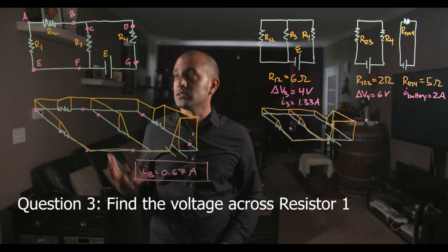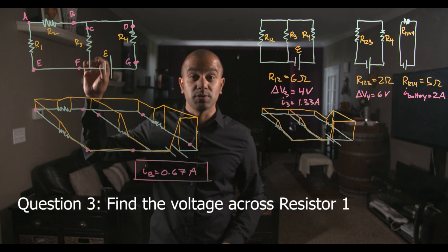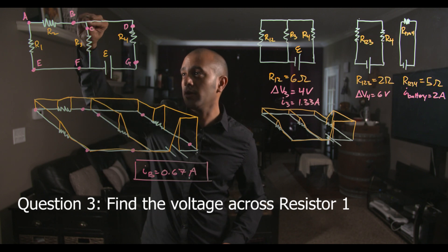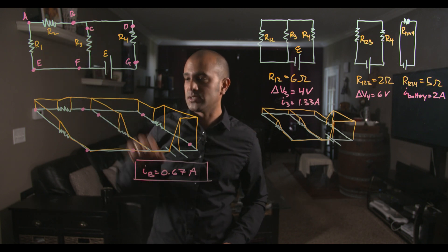Now for the last question it says, what is the voltage drop across resistor 1? And we can basically solve that immediately. We know that the current going through this branch is 0.67 amps.